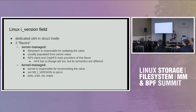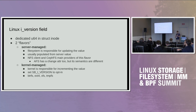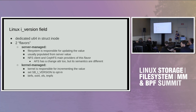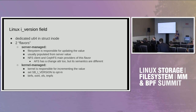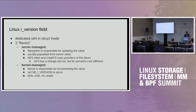If you set SB_I_VERSION in your file system, the VFS will handle iVersion for you — whenever it goes to update the C time, it will take care of iVersion as well. There aren't very many file systems that set that flag. If NFS is mounted on OverlayFS, it manufactures the change attribute from the C time in that case. This is one reason for going to the multigrain timestamp idea.